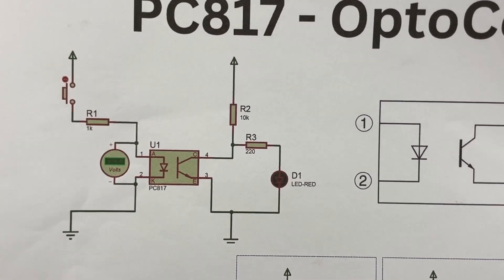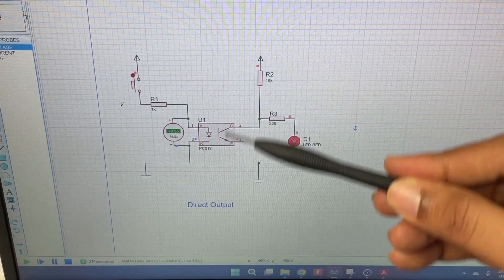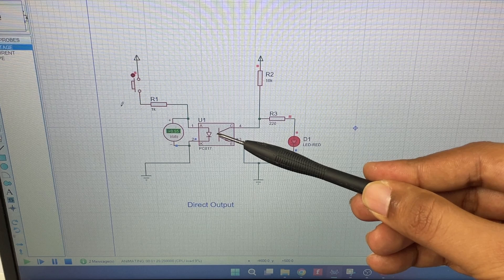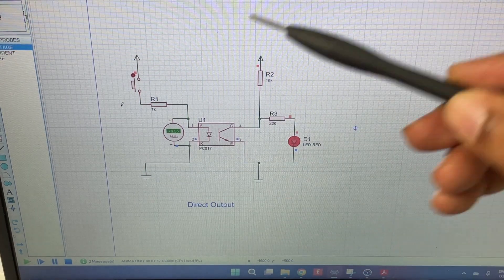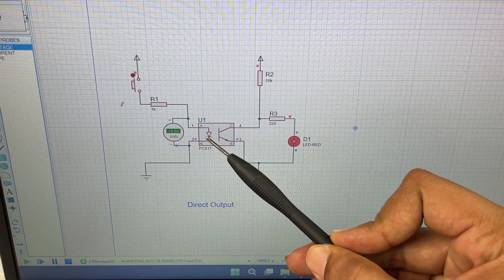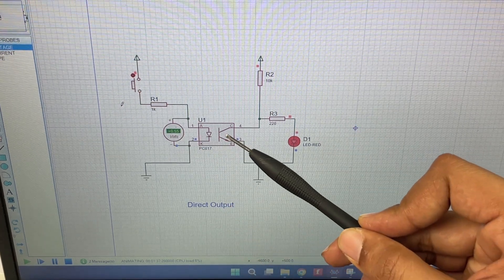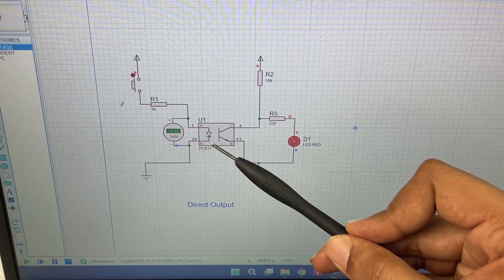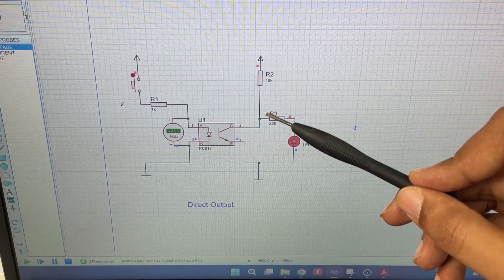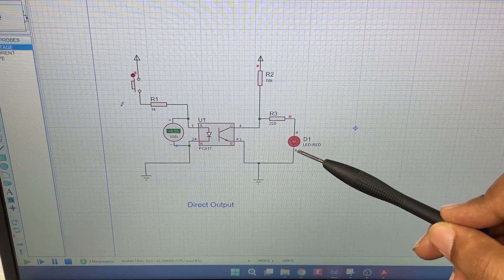So we have two different circuits here separated by this optocoupler. Both have their own power supply and ground. Now this LED over here is off because this switch is open and because of that this transistor is also open because the base is not triggered by this LED. Hence the power from this power supply goes directly to this LED and that is why the LED is on.